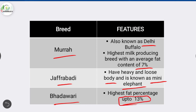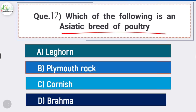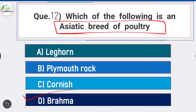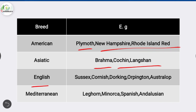Question number twelve: which of the following is an Asiatic breed of poultry? The answer is option D - Brahma. Brahma is an example of an Asiatic breed of poultry. American breeds include Plymouth Rock, New Hampshire, and Rhode Island Red. Asiatic breeds include Brahma, Cochin, and Langshan. English breeds include Sussex, Cornish, Dorking, and Australorp. Mediterranean breeds include Leghorn, Minorca, Spanish, and Andalusian.